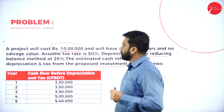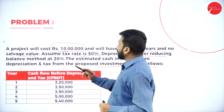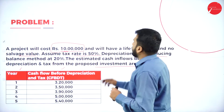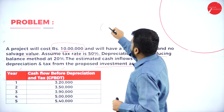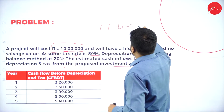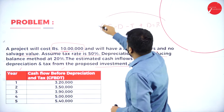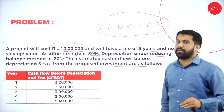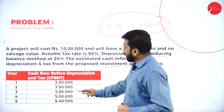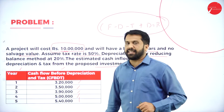The estimated cash inflow before depreciation and tax from the proposed investment are as follows. Your cash flow before depreciation and tax — we have all the calculation: cash flow minus depreciation minus taxation, add back depreciation, and you will get your return. I'll show you that now. The values are 3 lakh 20,000; 3 lakh 50; 3 lakh 90; 5 lakh.